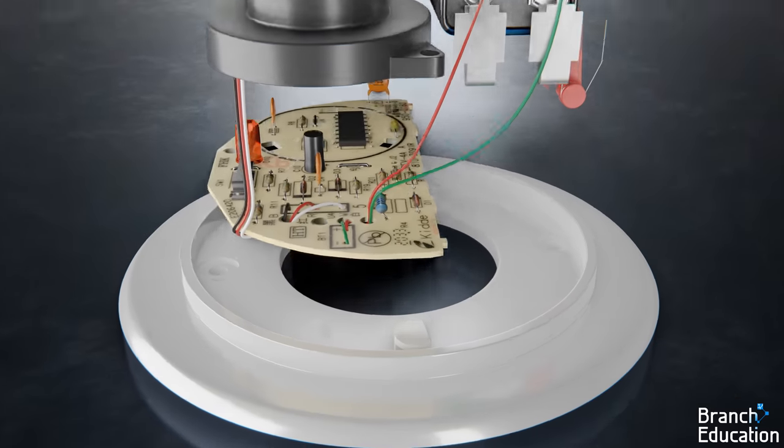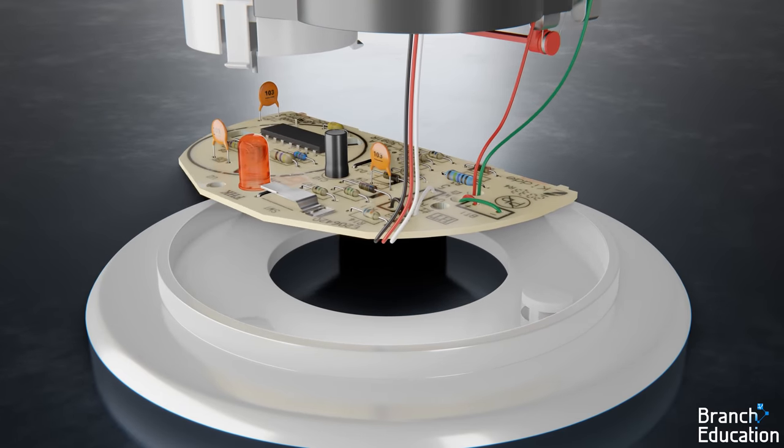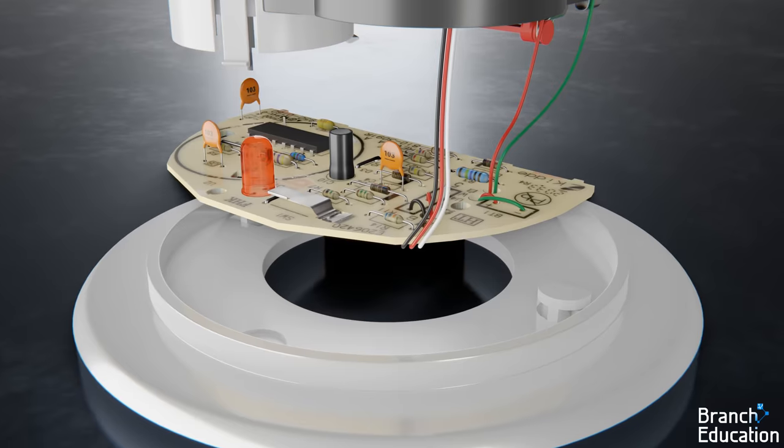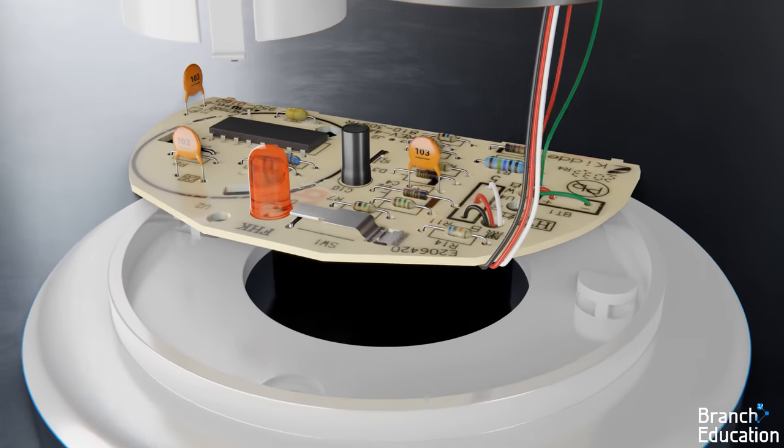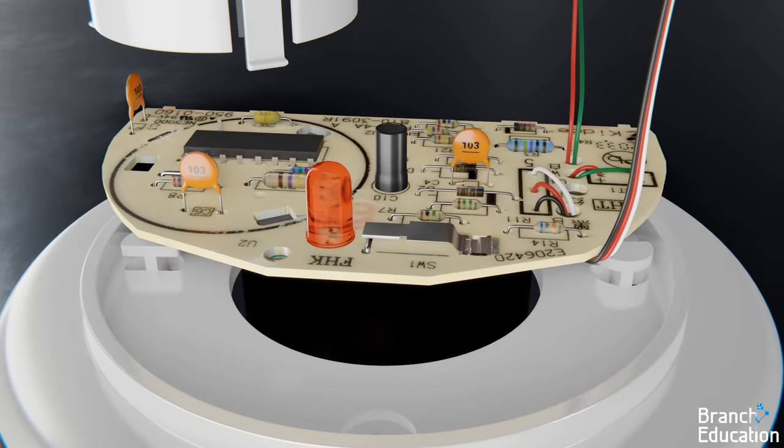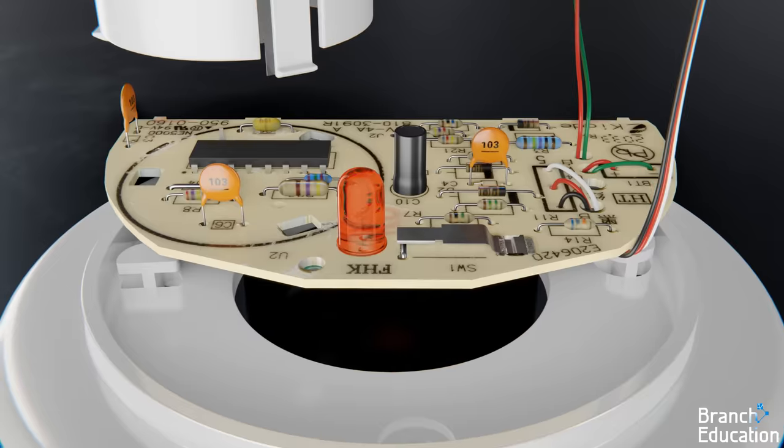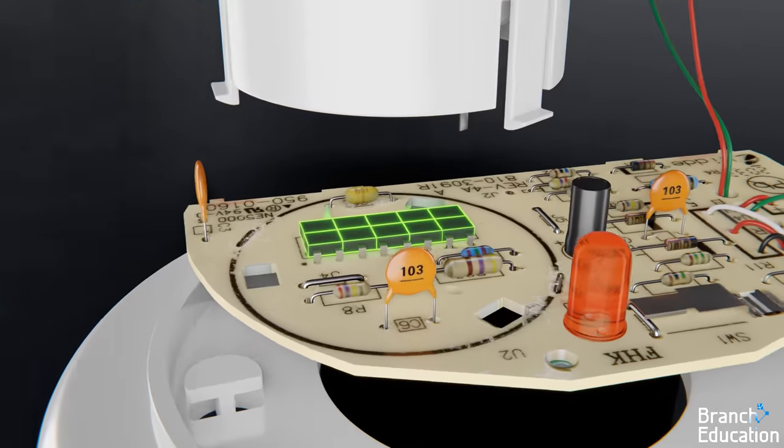Next we have a through-hole printed circuit board, or PCB, which holds just a few basic components and is designed in such a way to be extremely inexpensive. On the PCB we have the main microchip.